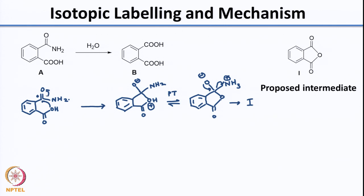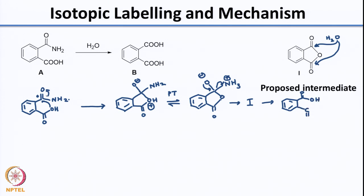Now the intermediate I is symmetric. Once you have intermediate I, you can have water attack at either of these positions - it can either attack here or here. Since it is symmetric, again after a bunch of proton transfers, you get your product.